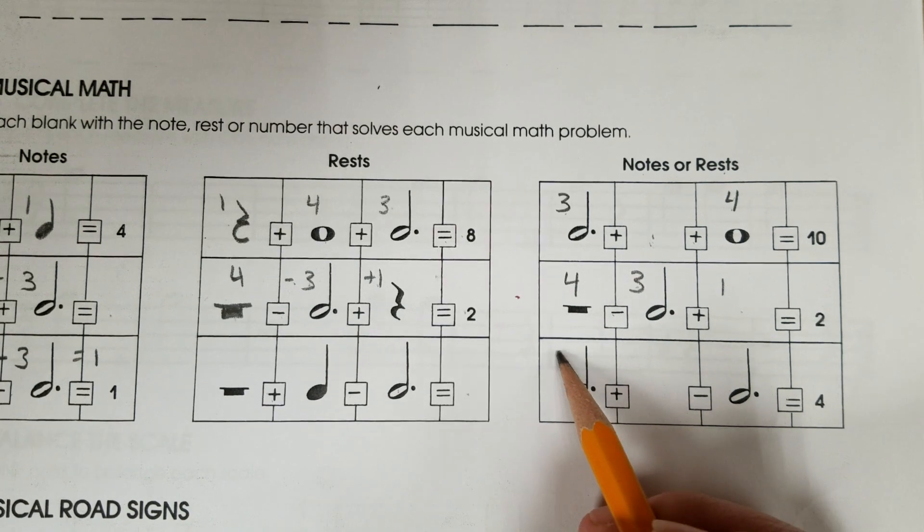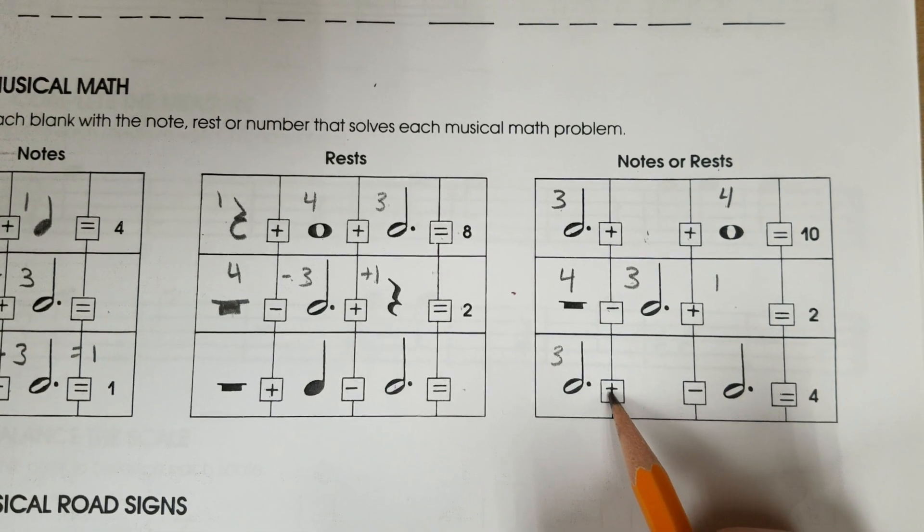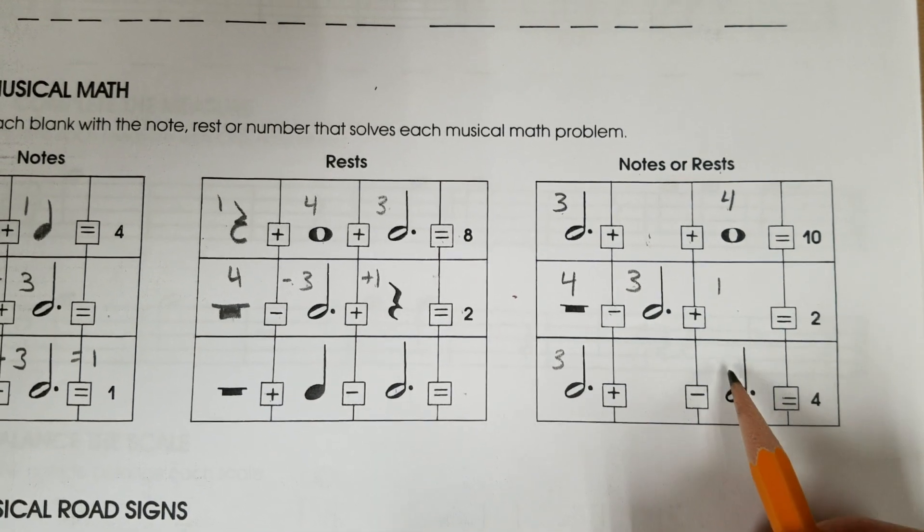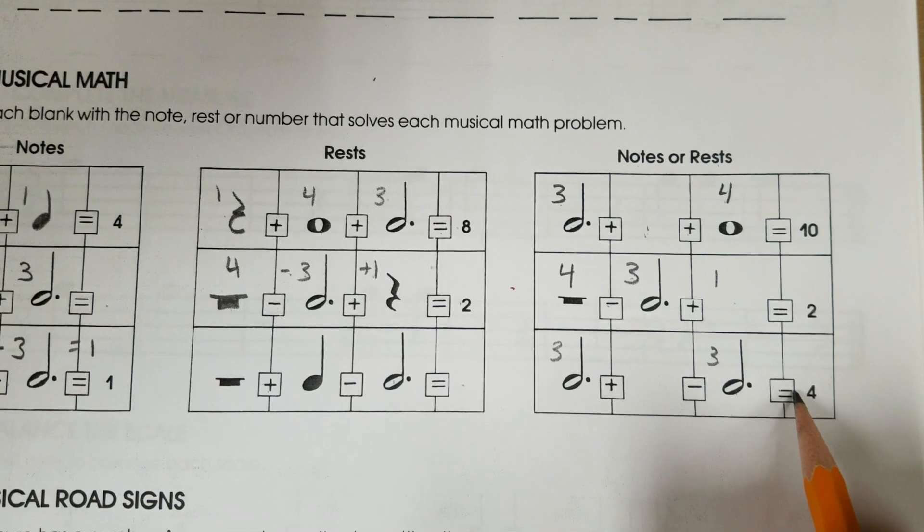Lastly, half note with a dot is 3, plus what, minus a dotted half note, which is 3, equals 4.